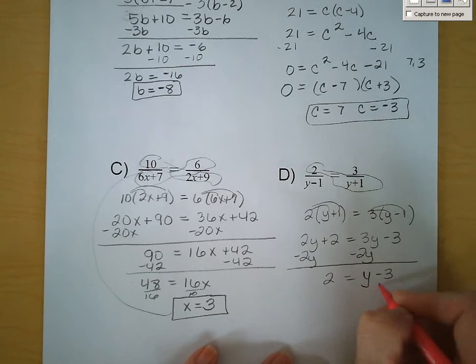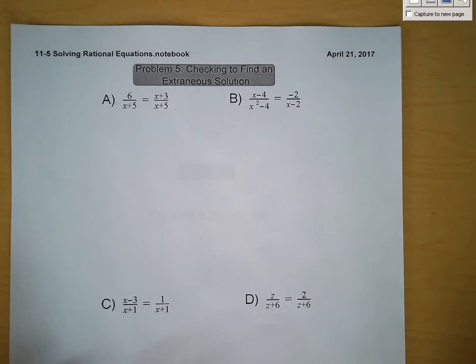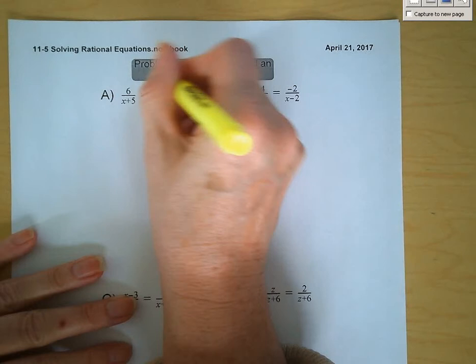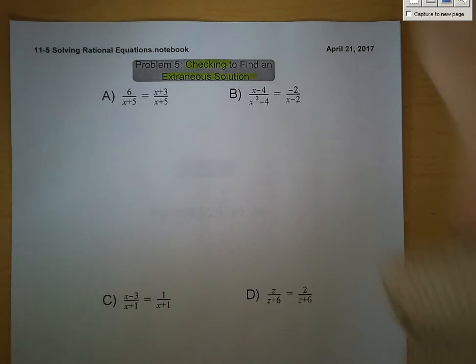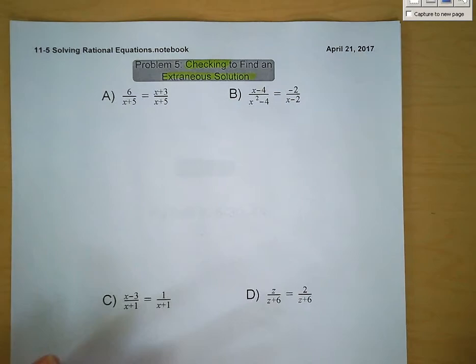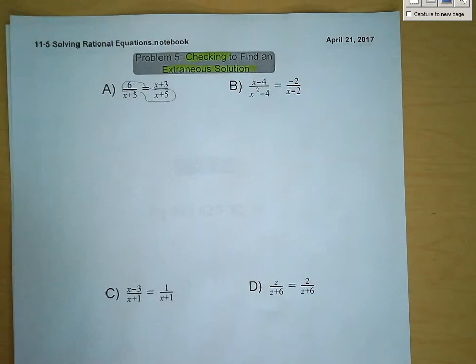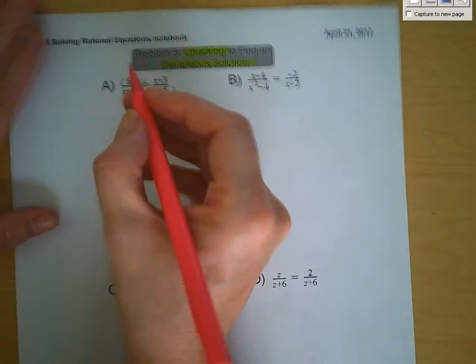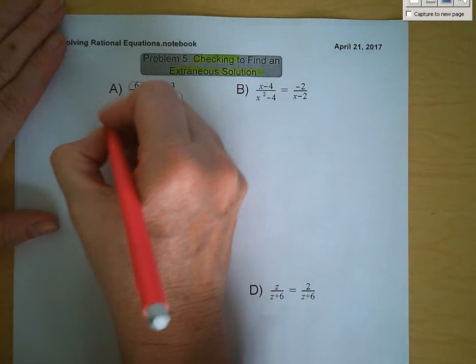Now, problem number 5: checking to find an extraneous solution. In these problems we will end up with two solutions, and one of them will not be a solution for the problem — it will be extraneous. We're starting off the same way, doing our cross-multiplying. So we have 6 times the quantity x plus 5 is equal to the quantity x plus 3 times the quantity x plus 5.